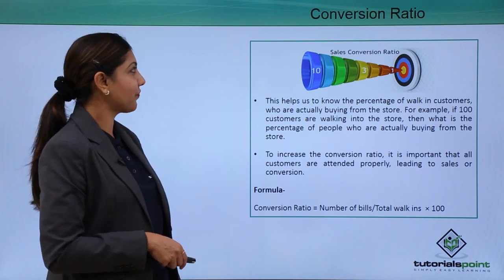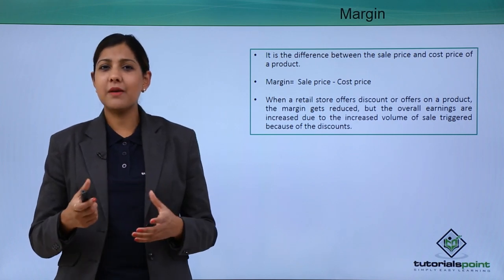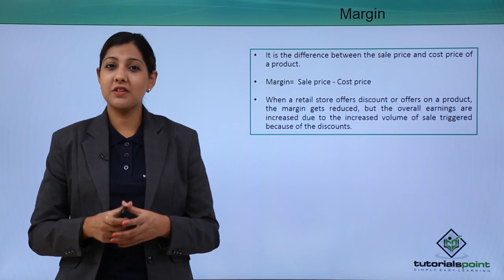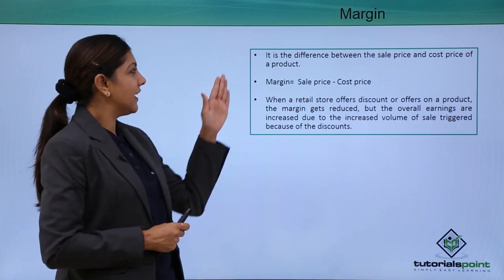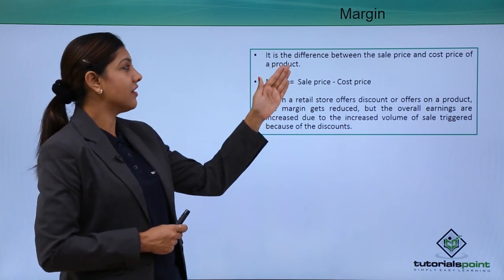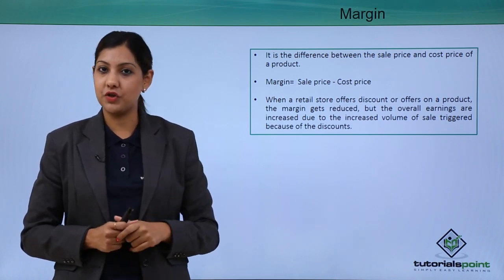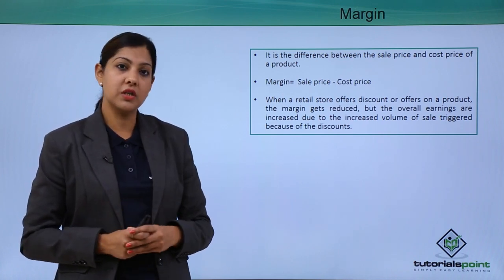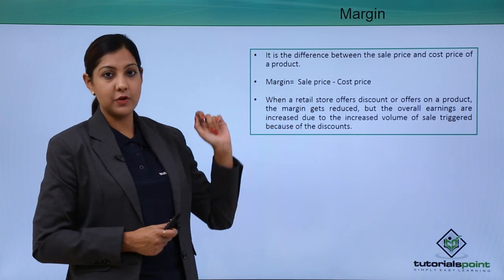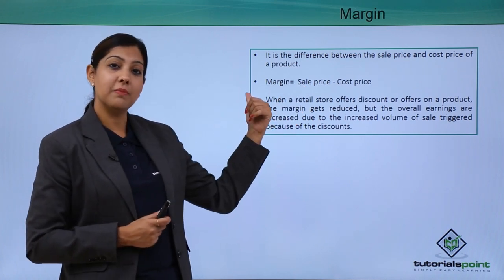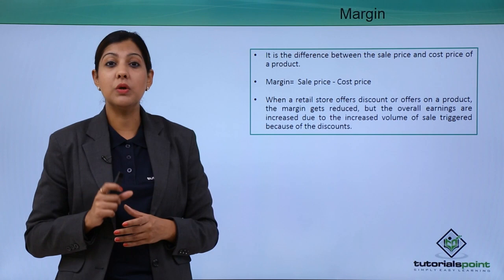Let's understand what margin is. You may have heard a shopkeeper say they have very little margin on a particular product. Margin is the difference between the sale price and the cost price of a product. For example, if the cost price is 100 and the sale price is 150, then the margin is 150 − 100 = 50 rupees, which is the profit kept by the shop owner.